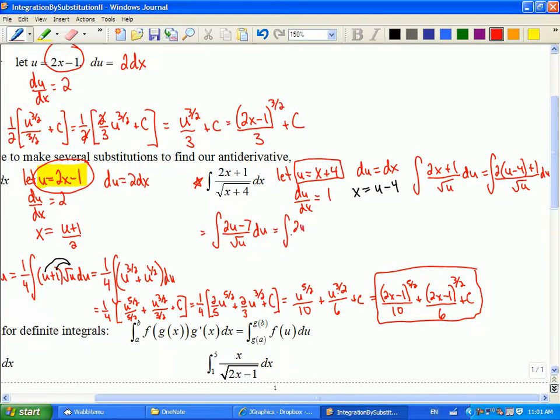And that gets me to 2u minus 7 over root u du. So we're at 2u over root u minus 7 over root u. And now I'll simplify it into power rule. So that'll bring me to 5 halves. So dividing by 5 halves is the same as multiplying by 2 fifths. So I'll have 4 fifths u to the 5 over 2.